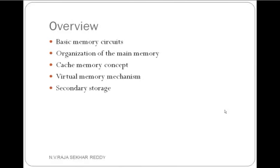These are the things we are going to discuss in this chapter: basic memory circuits, organization of main memory, cache memory, virtual memory, and then secondary storage. These are all the different categories of memories.